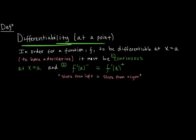In order for a function f to be differentiable at a point x = a — in other words to have a derivative — it must meet two criteria. First, it must be continuous at x = a; it must be a smooth curve, with no jump discontinuities or point discontinuities. Second, the slope from the left must equal the slope from the right. As we saw in the example, as we approach from the left side towards point A and from the right side, the slope must be the same, meaning the derivative from the left must equal the derivative from the right.